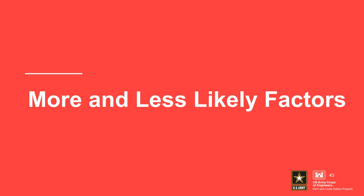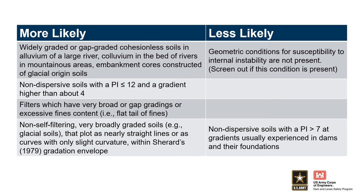This table can be used to help assess the likelihood of a soil being susceptible to internal instability, as it addresses geometric conditions only. It can be used as a starting point, but the risk team must develop project-specific more-likely and less-likely factors to guide subjective probability estimation. More-likely factors include widely graded or gap graded cohesionless soils in alluvium of a large river, colluvium in the beds of rivers and mountainous areas, and embankment cores constructed of glacial origin soils. Less-likely factors include when geometric conditions for susceptibility to internal instability are not present, and non-dispersive soils with a PI greater than 7 at gradients usually experienced in dams and their foundations.